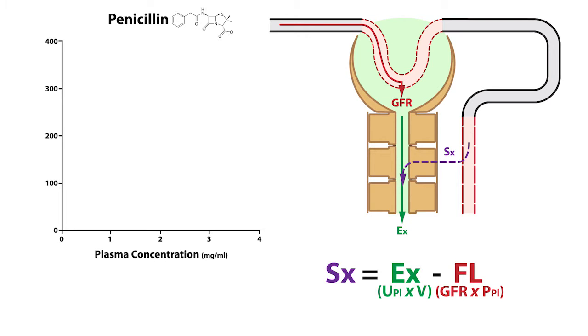Glomerular filtration rate is 100 milliliters per minute. Plasma penicillin concentration is 4 milligrams per milliliter. Urine concentration of penicillin is 200 milligrams per milliliter, and urine flow rate is 1 milliliter per minute. We should point out that these numbers are just examples and should not be used as standards or for diagnostic purposes. Rather, they're meant to demonstrate the general purpose of secretion and its role in clearance.